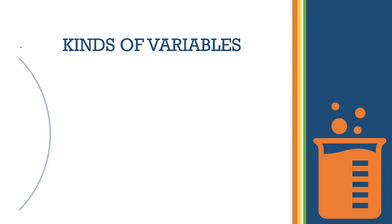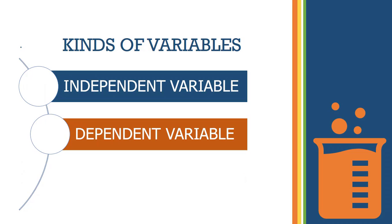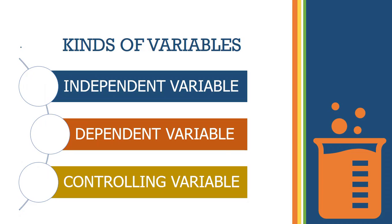There are three kinds of variables. The first one is the independent variable, the second one is the dependent variable, and the third one is the controlling variable.